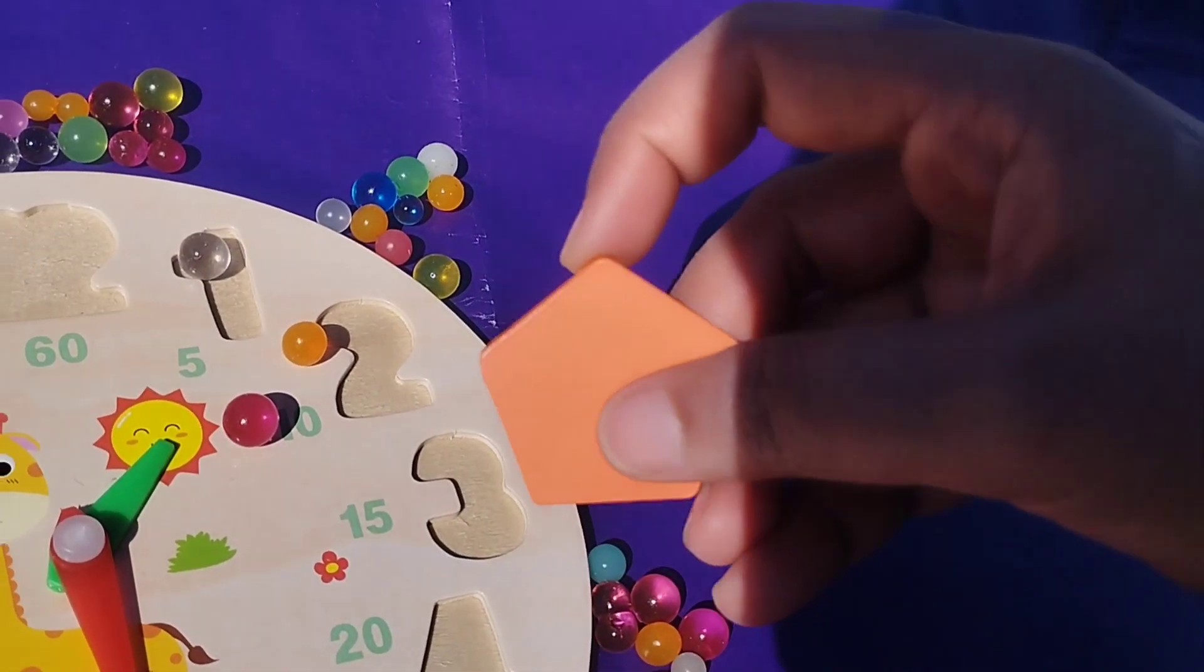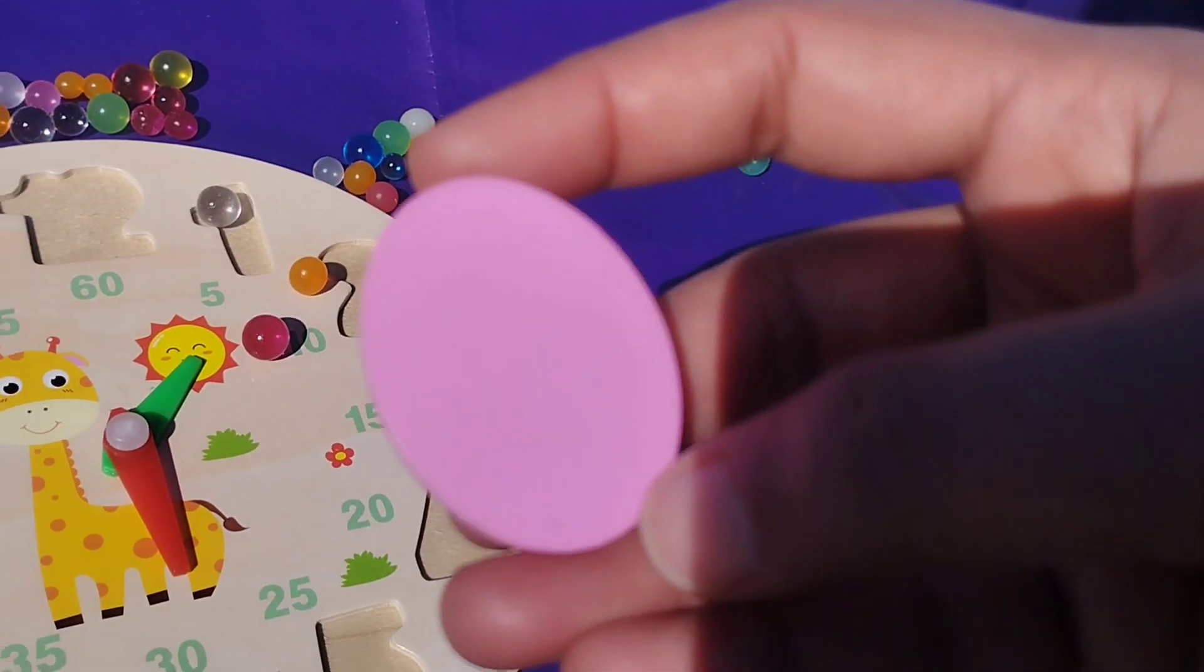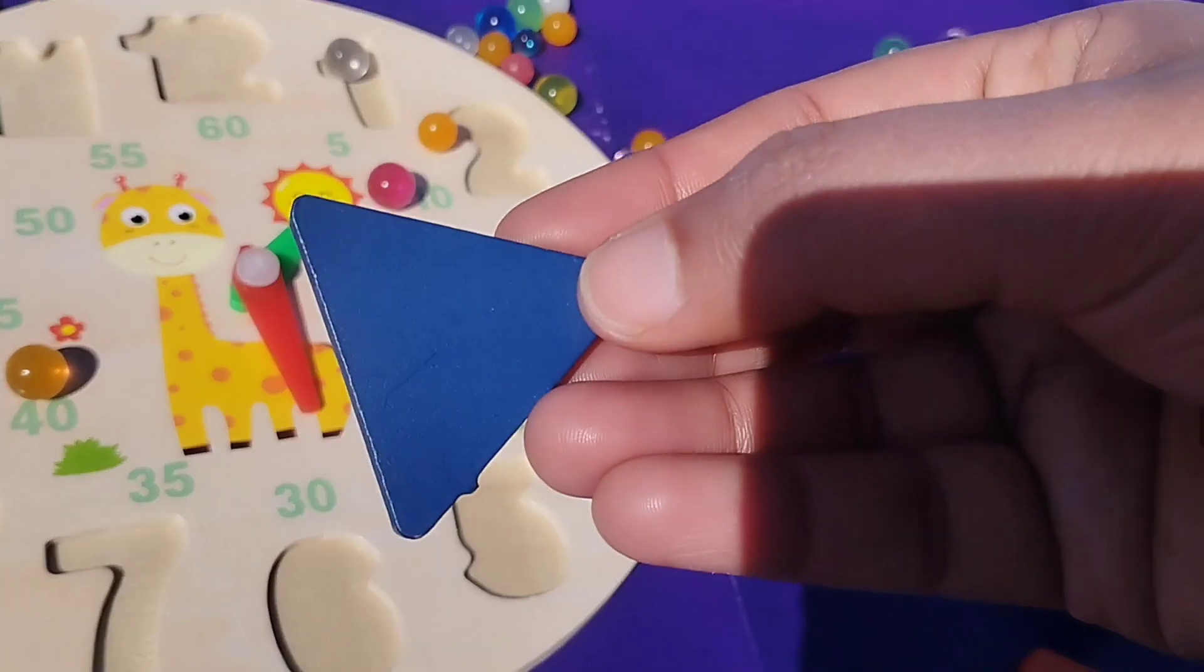The next shape is pentagon. This is pentagon shape. The next shape is oval. This is oval shape.